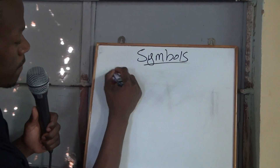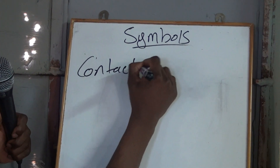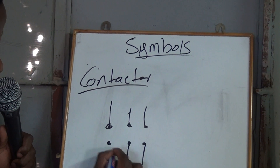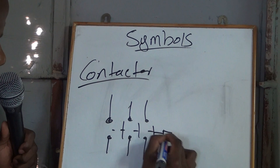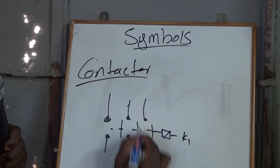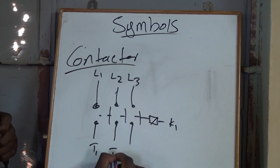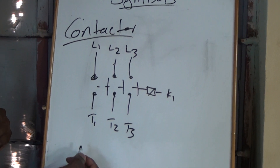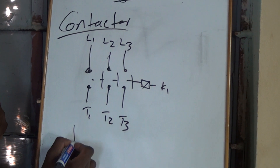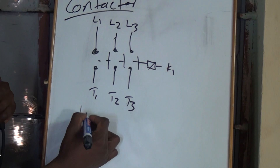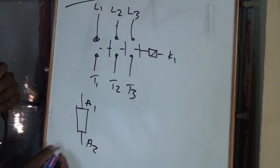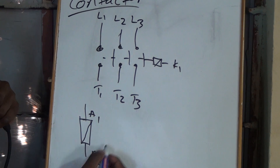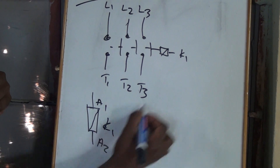This is how you draw your contactor, with T1, T2, T3 — that's your input and output. That's how you draw the contactor and the coil of a contactor, with A1 and A2. You can either draw it like this or put a diagonal line like that, and label it C or K1 since we are working with K1.